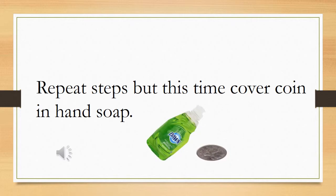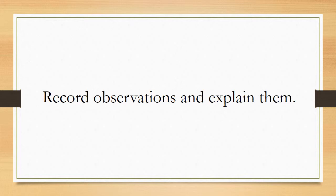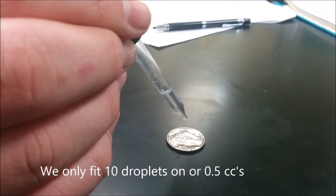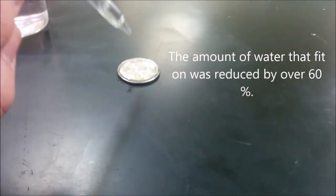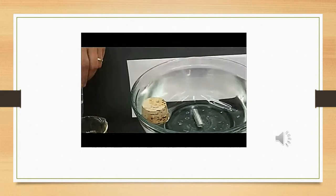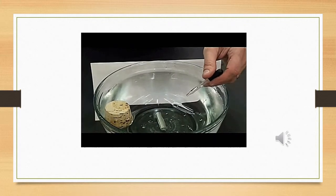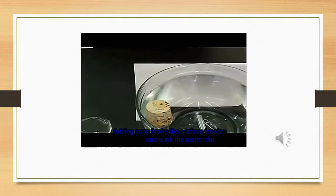For this step we were to repeat the process we had just previously performed, but instead cover the coin with some hand soap just to see how this affected the amount of drops we could get onto the coin itself. When we repeated the experiment with the soap coating on the coin, we were shocked to see a drastic reduction in the amount of drops we could get onto the coin.